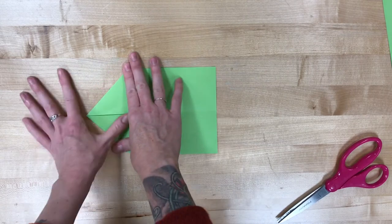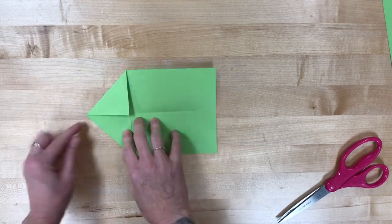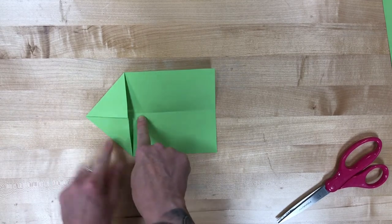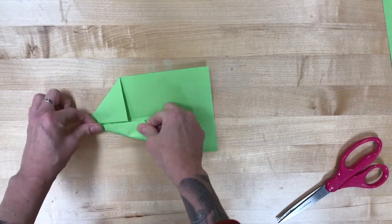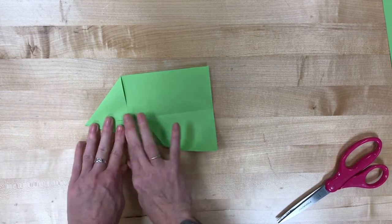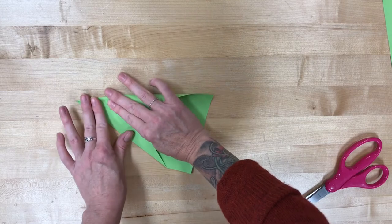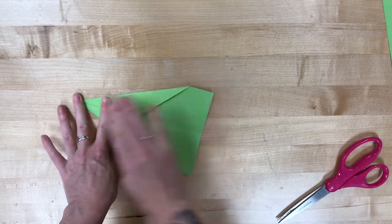We're going to turn it, and then that line that we just made at a diagonal, we're going to bring that to the center line now. I'm going to do it on both sides. So this is pretty standard paper airplane type stuff.